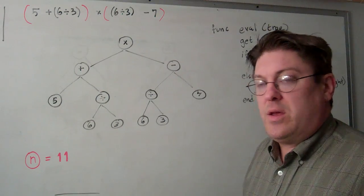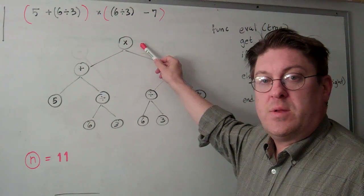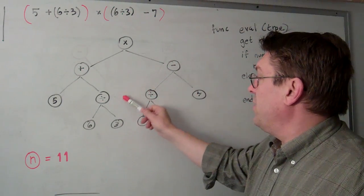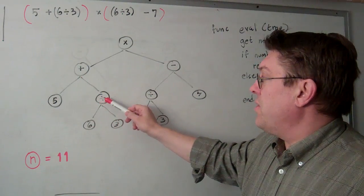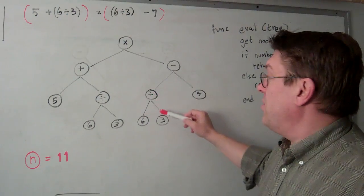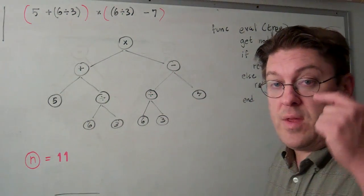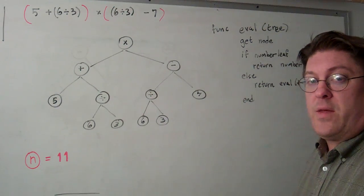To set this up in a tree, we have the multiplication symbol here in this internal node, and we have basically the tree built out as it is: 5 plus the quantity 6 divided by 3 times the quantity 6 divided by 3 minus 7. Same thing, so that gives us the tree we're looking for or one example of it.